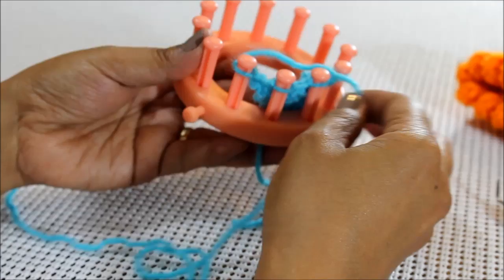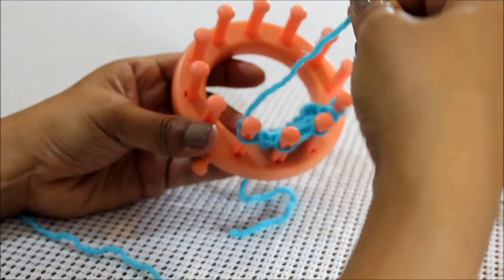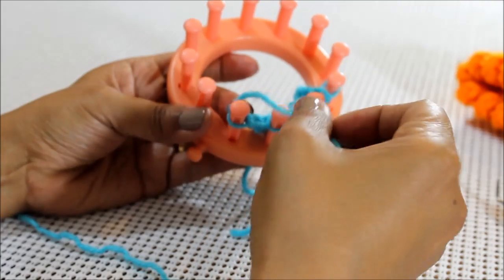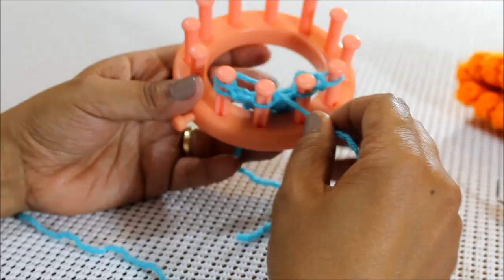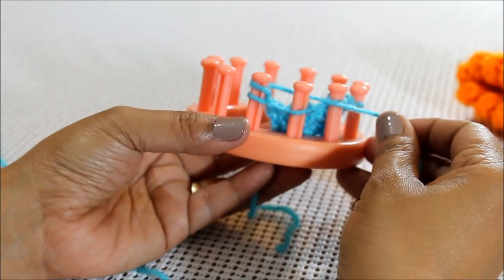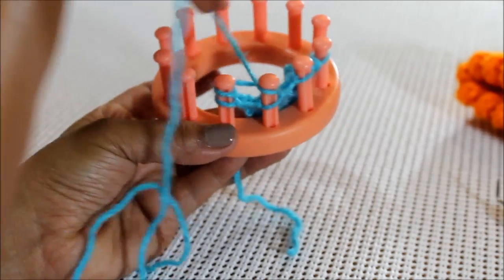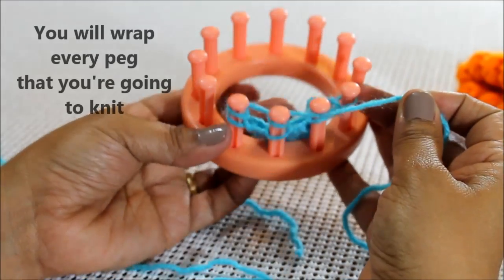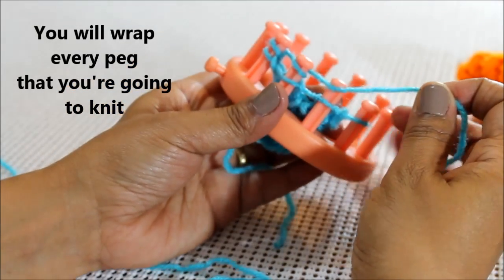You're basically going to wrap each peg with your working yarn. So you're going to take it from behind, you're going to bring it forward and you're wrapping the peg. Okay, from the back to the front and you wrap. And that forms an E, which is where the E wrap gets its name.